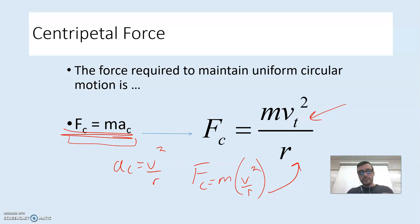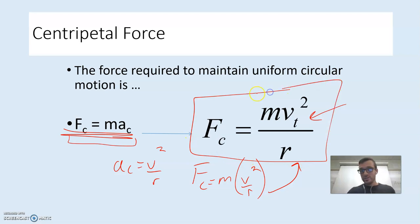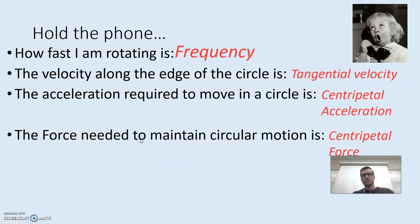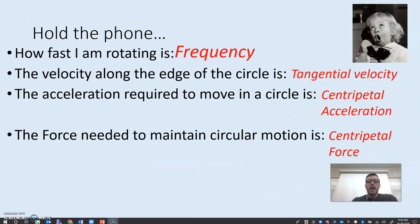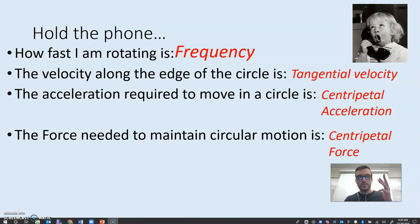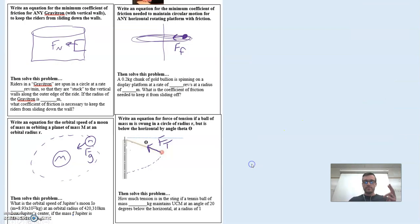Note that FC = mv²/R is not on your equation sheet, but knowing F = MA and that AC = v²/R — which is on the sheet — we can derive the centripetal force equation as mv_T²/R. To check in: how fast you are rotating is called frequency. How fast you're going along the edge of a circle is called tangential velocity. The acceleration required to move in a circle is centripetal acceleration, towards the center. And the force needed to maintain circular motion is a centripetal, or towards the center, force.